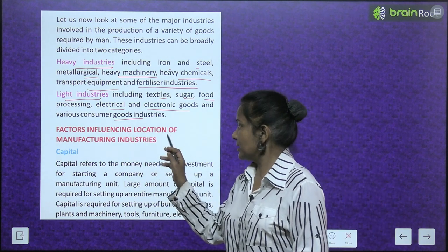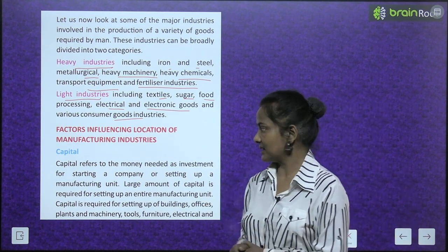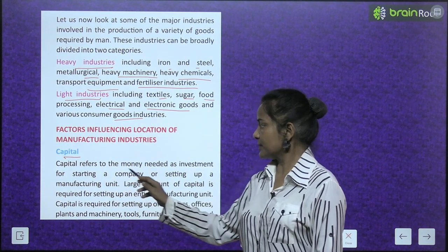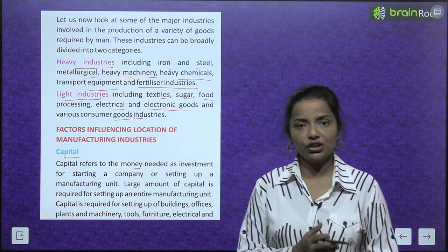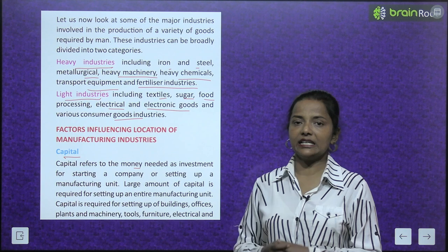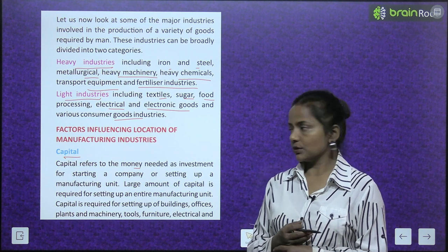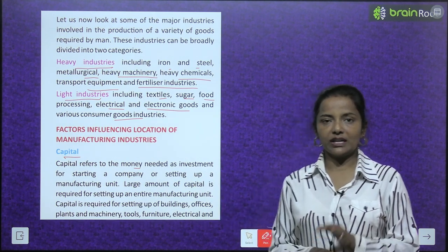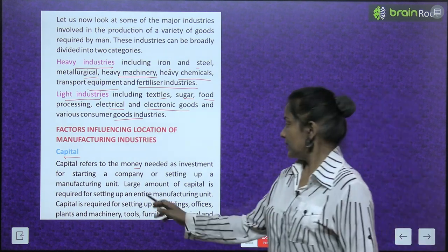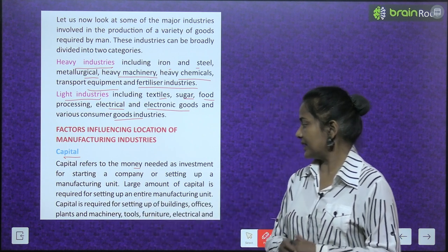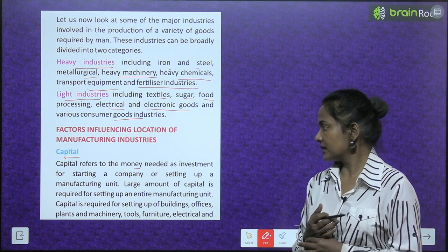Now, factors influencing location of manufacturing industries. The first one is capital. Capital refers to the money needed as investment for starting a company or setting up a manufacturing unit. A large amount of capital is required for setting up an entire manufacturing unit.